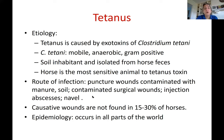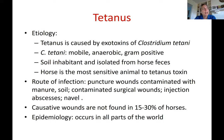Contaminated surgical wounds, injection abscesses, and navel wounds can also be a problem — anything that creates an anaerobic environment. That said, causative wounds are not found in about 15 to 30 percent of horses that die from tetanus. It's thought that gastric ulcers or other ulcerations in the GI tract can create that environment, allowing bacteria to form toxins that gain circulation and spread disease throughout the body.